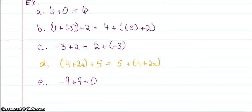Let's look at some examples. 6 + 0 = 6. I got back what I started with, so that's going to be the identity property.